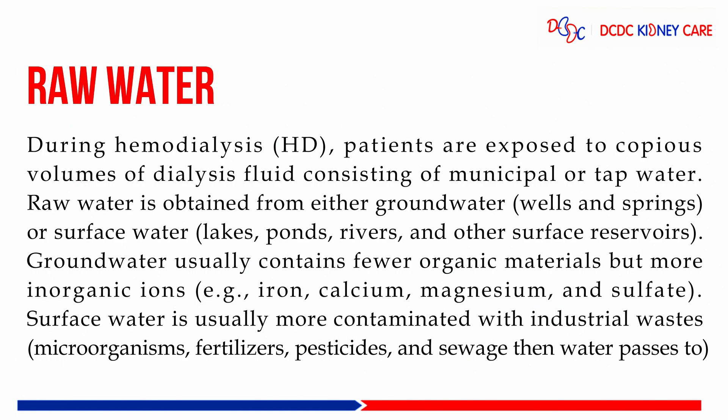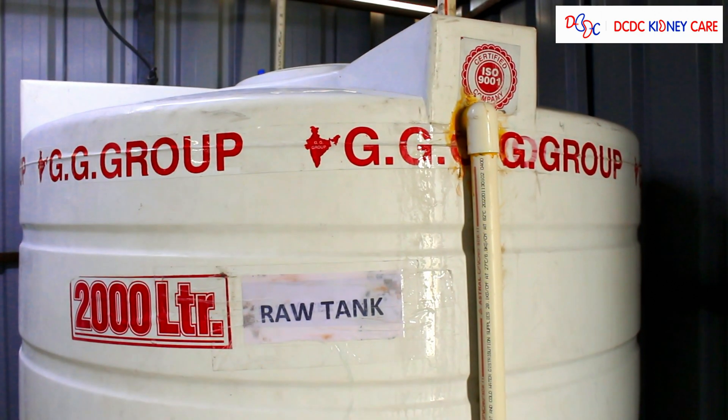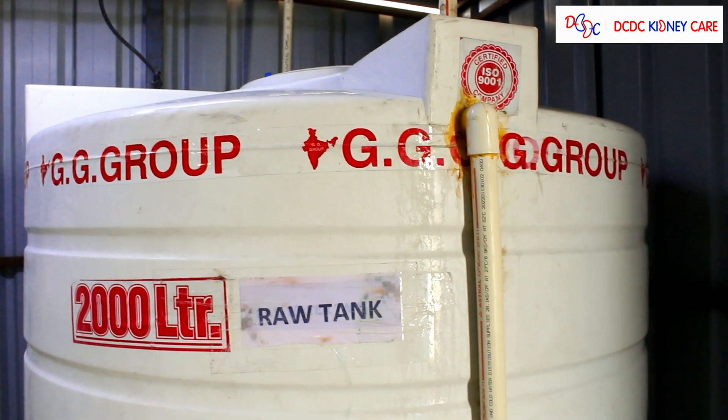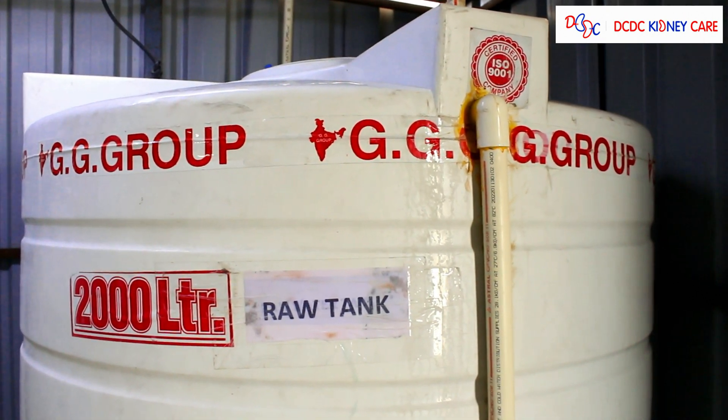Raw water is obtained from either groundwater or surface water, for example ponds, rivers, and other surface reservoirs.